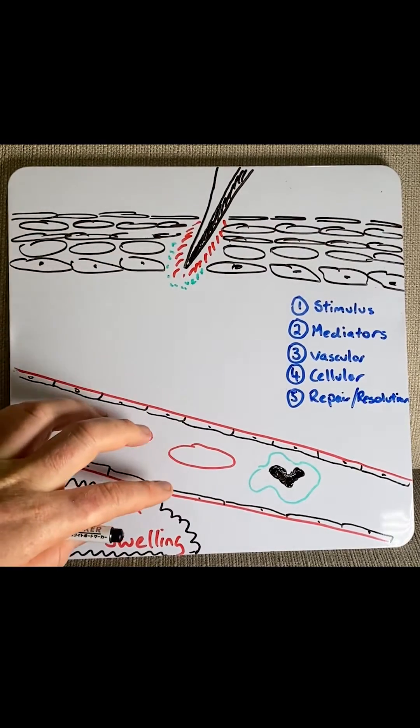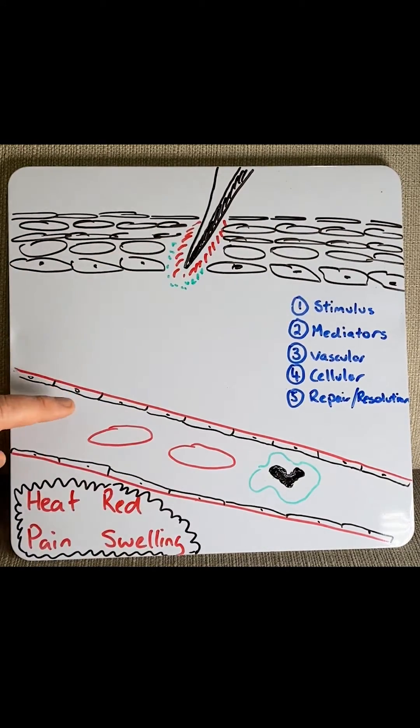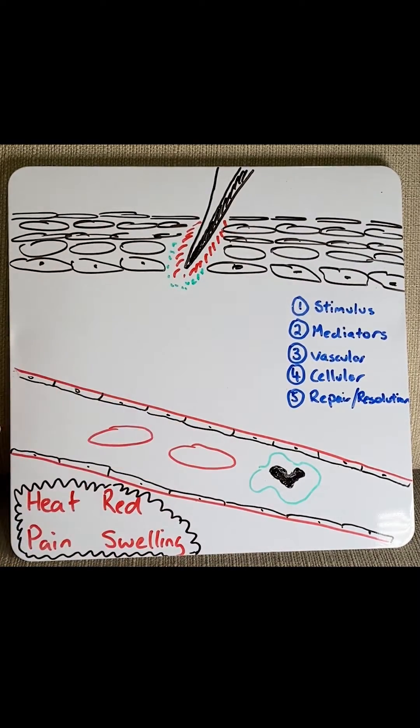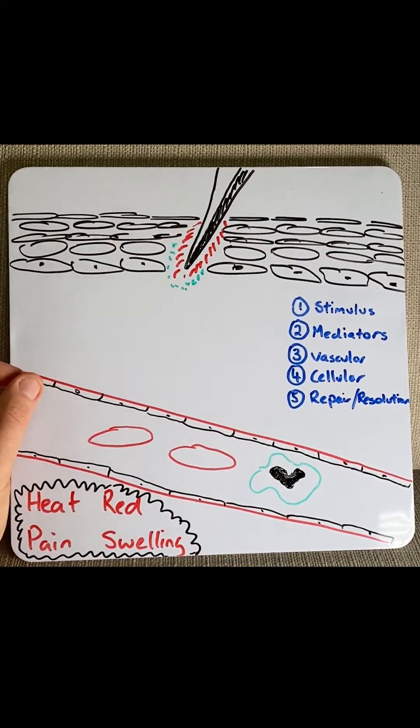These chemicals then go to the neighboring blood vessels where they interact with the cells that line the blood vessels, called endothelial cells. The response in the vascular phase is both vascular dilation as well as endothelial shrinkage.